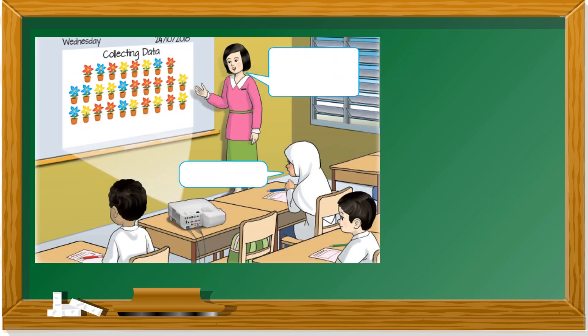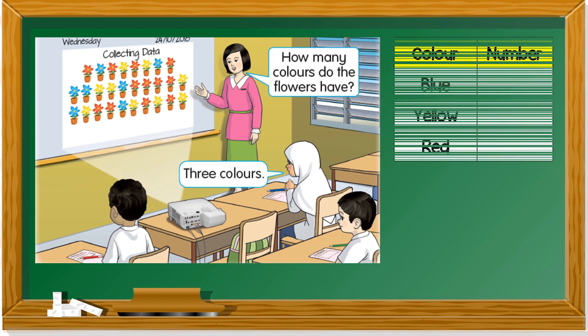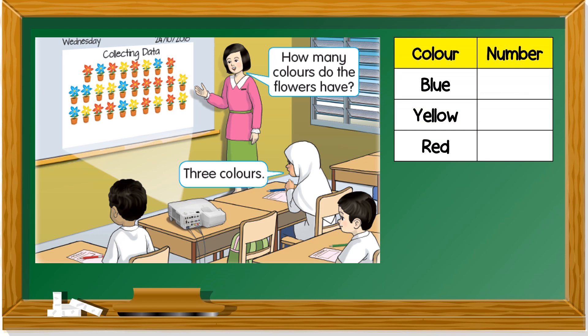Let's take a look at this photo. The teacher asks, how many colors do the flowers have? Can you count how many colors? Yes, there are three colors. You can write a list like this, a table like this.